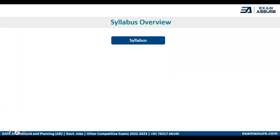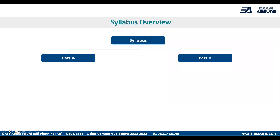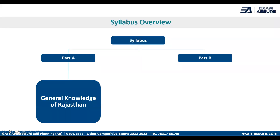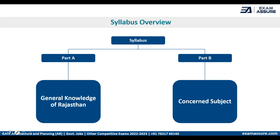As for the syllabus, it is divided into two parts — Part A and Part B — where Part A consists of general knowledge related to Rajasthan, and Part B consists of the concerned subject, that is the planning part.